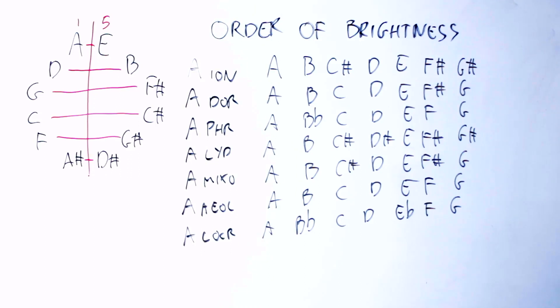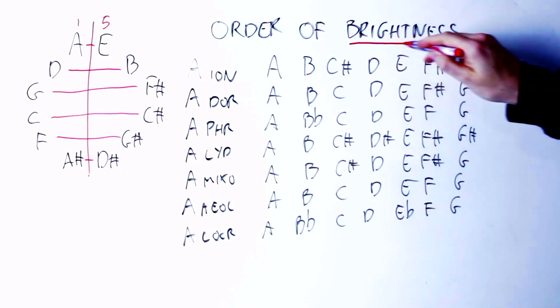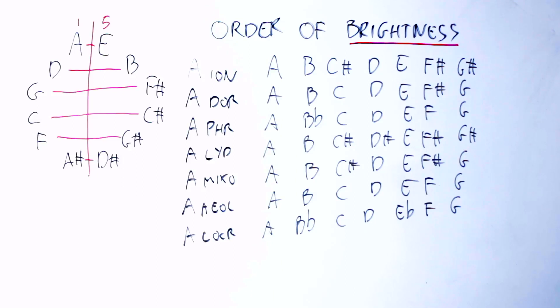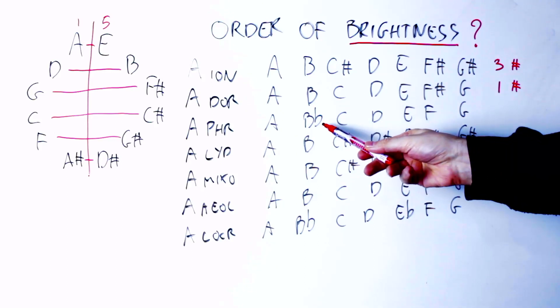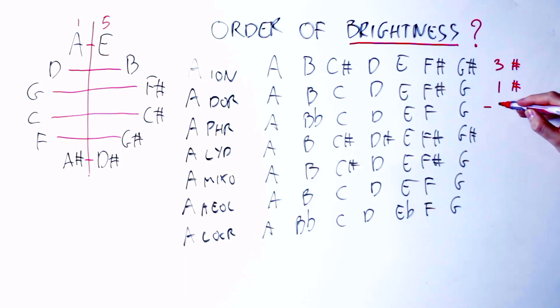Once I've done that, I want to check what is the relative brightness of those modes. How do I do that, and what is the brightness of a mode? Well, here I can count how many sharps there are in each mode. As you see, A Ionian has three sharps, A Dorian has only one sharp, A Phrygian has one flat.